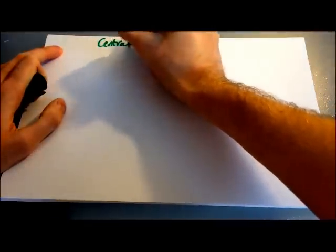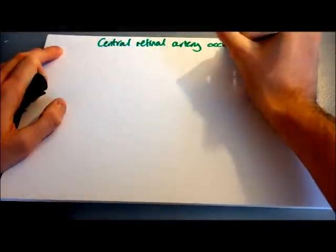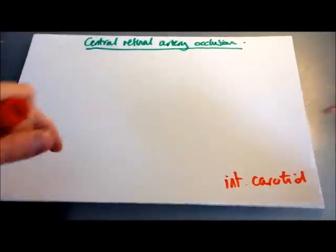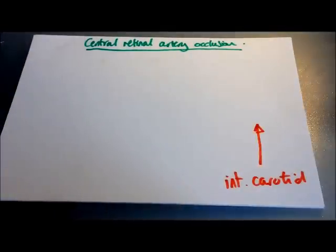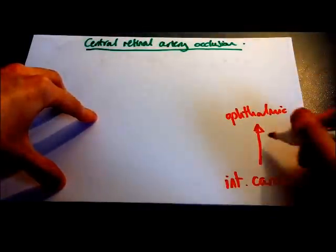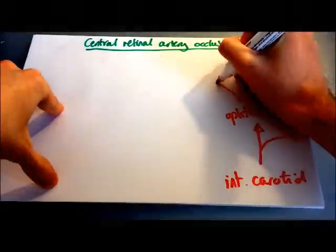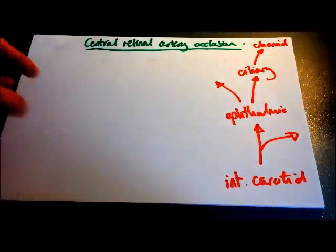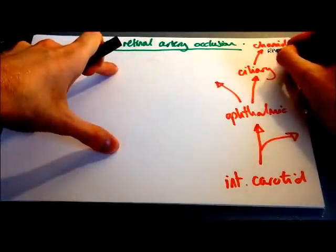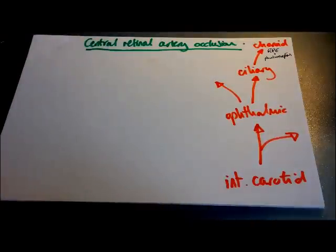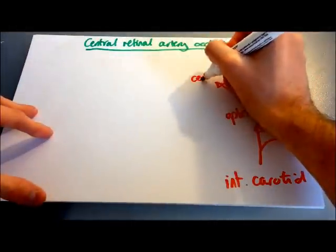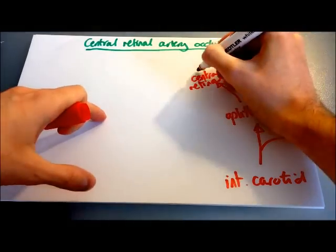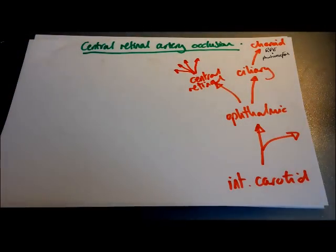Now we'll move on to looking at central retinal artery occlusion. To look at that, we'll first look at the blood supply to the retina. It begins with the internal carotid artery, which gives off the ophthalmic artery as one of its branches. The ophthalmic artery then gives off two different branches — one being the ciliary arteries, which go onto the choroid of the eye, supplying the retinal pigment epithelium and the photoreceptors. The other branch is the central retinal artery, which emerges from the optic disc, dividing into four branches supplying the neural retina — and these are the branches you can see on fundoscopy.